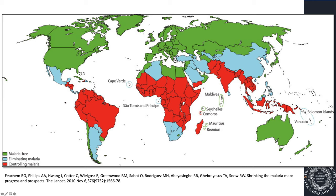Western Europe and Russia are similar — many countries in more temperate climates eliminated malaria. These blue countries are all in the process of eliminating malaria, trying to get rid of transmission from their borders. The red countries are not quite ready to eliminate but are still trying to control it.